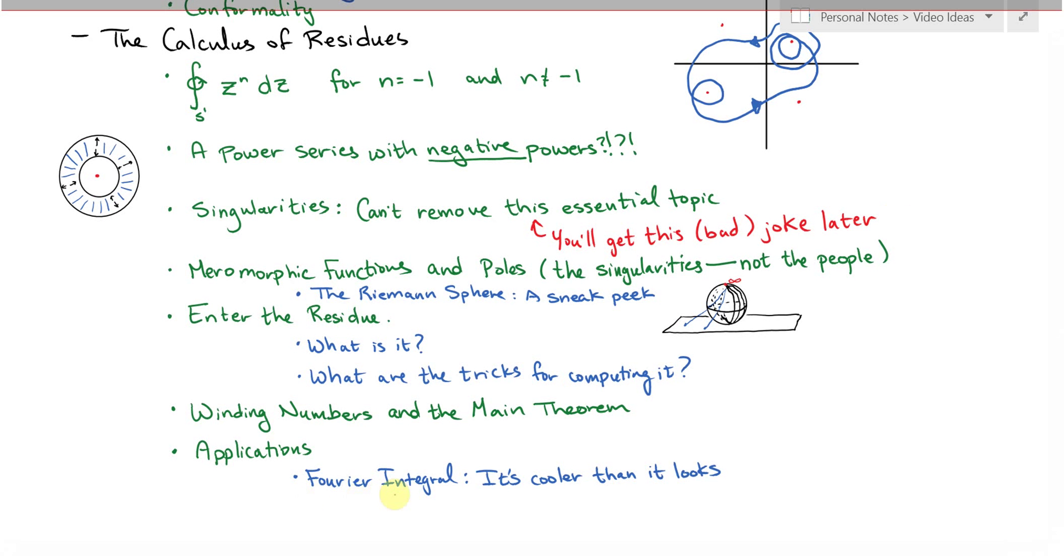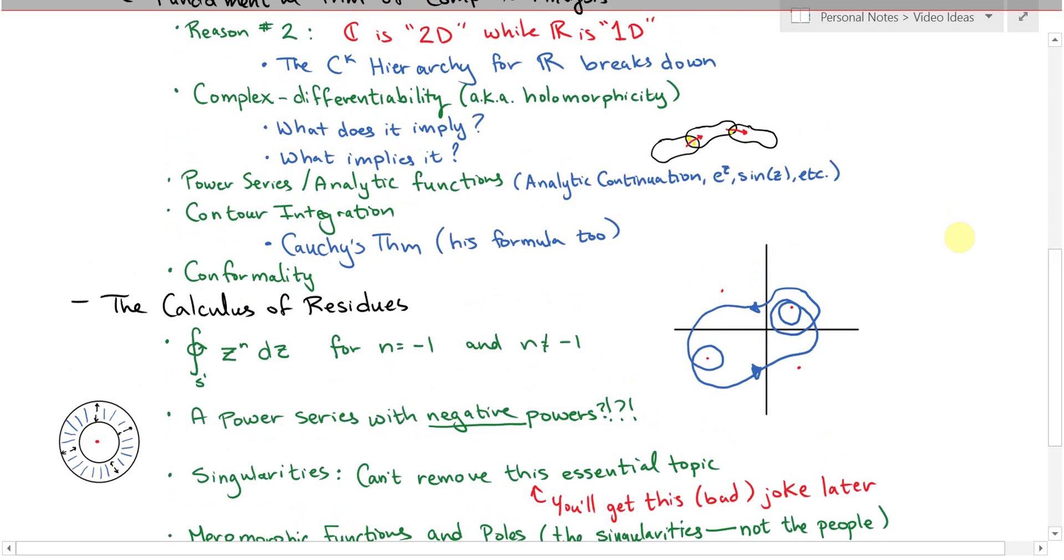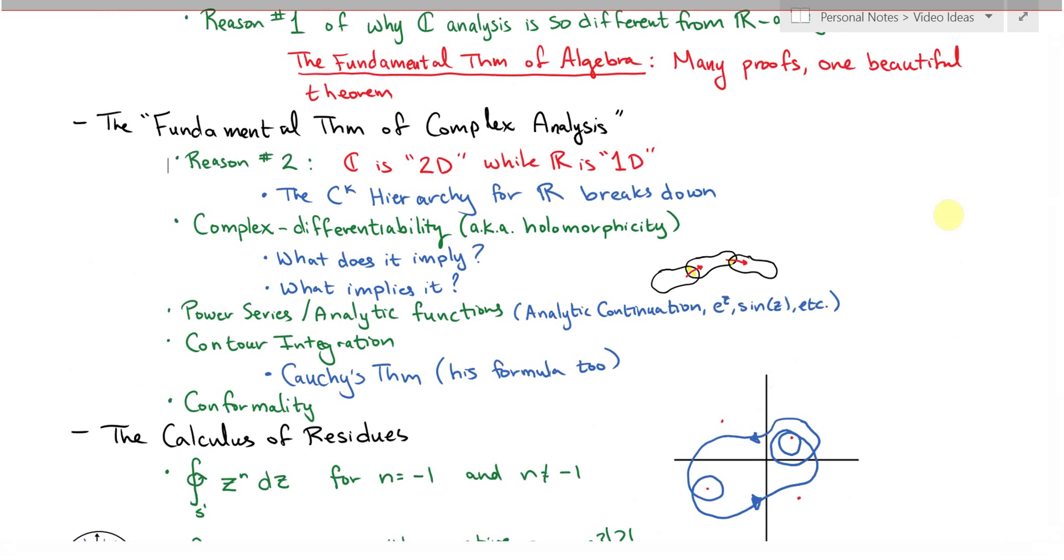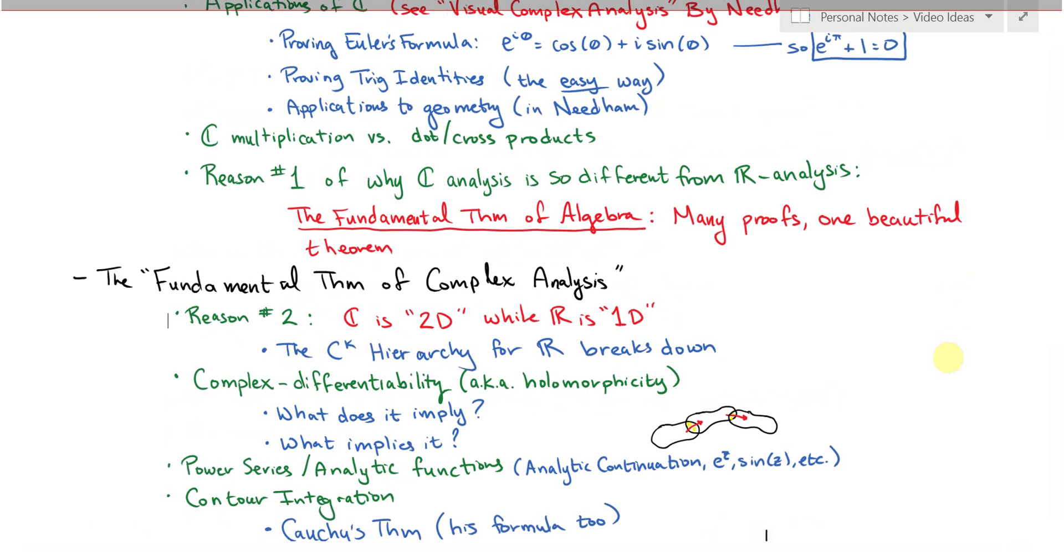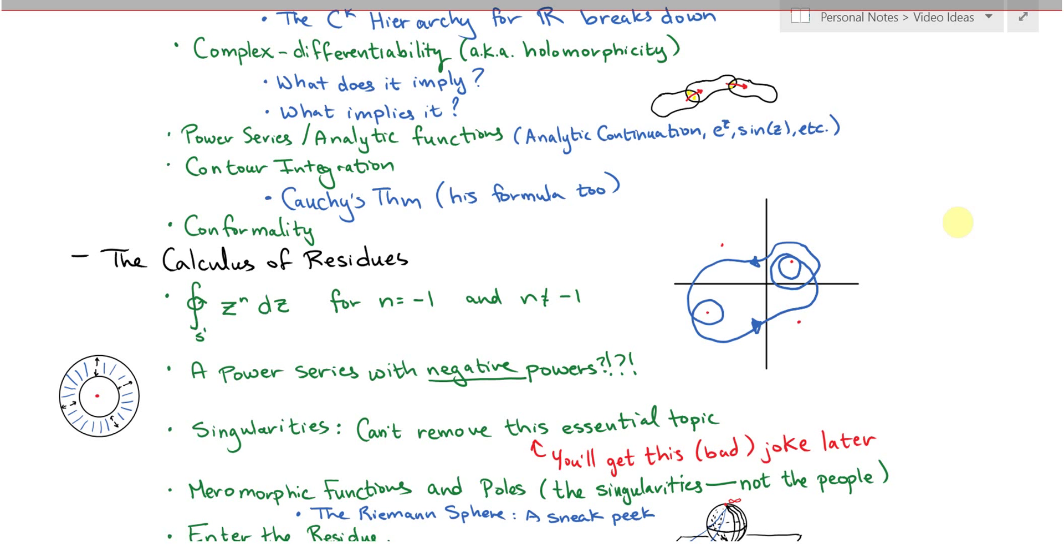And there are some interesting applications of this complex variable theory. You know, it's said that the shortest path between two truths in the real line passes through the complex plane. You'll understand that joke later on.